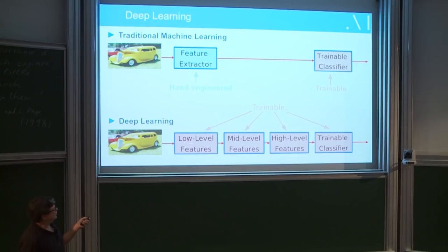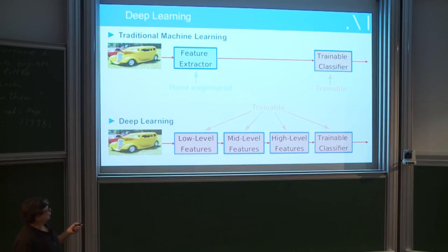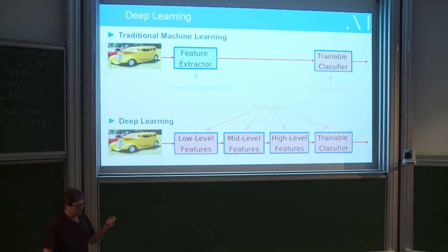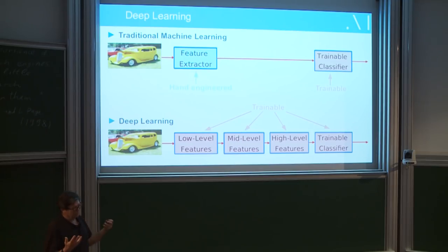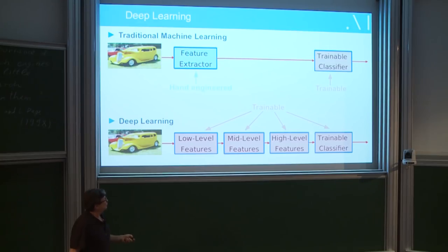From a mathematical point of view, you can actually approximate any function you want with only two layers — basically one layer of linear operations, one layer of non-linear pointwise operations, and another layer of linear operations. So from the purely mathematical point of view this is completely useless, but from a practical point of view it is very useful because of the efficiency of the representation.